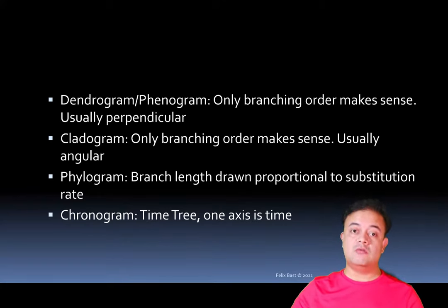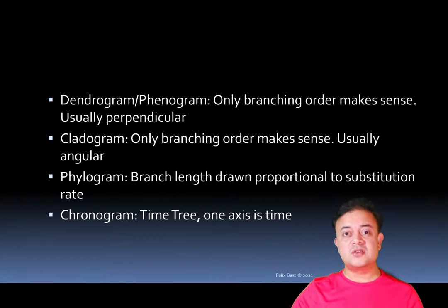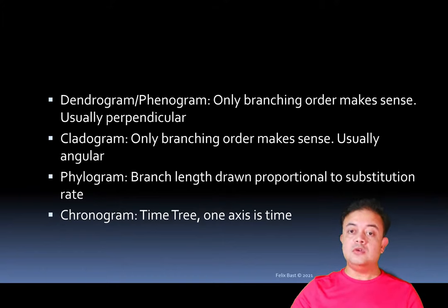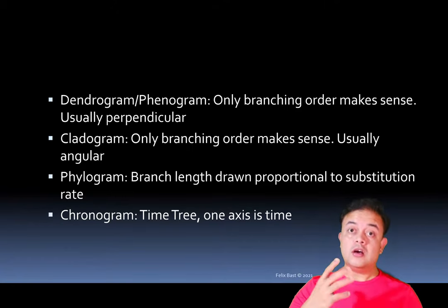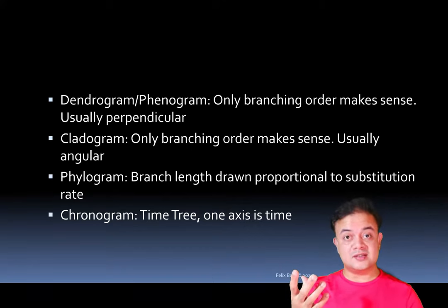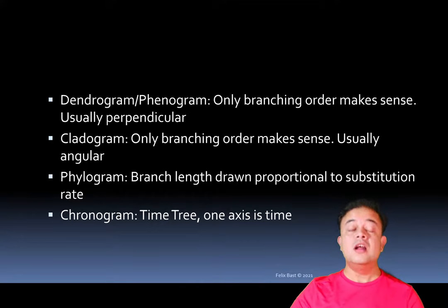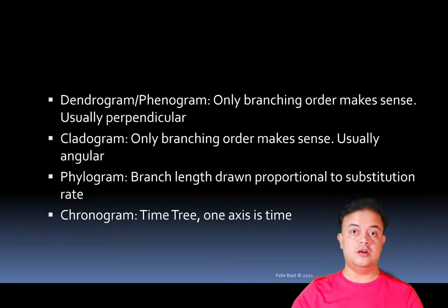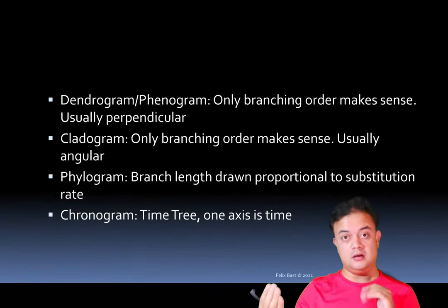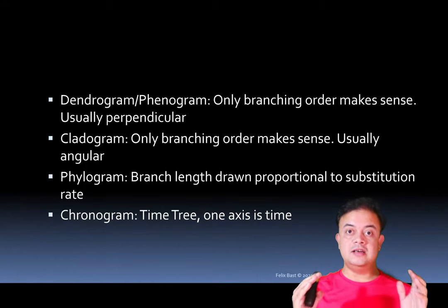There are many ways of drawing or illustrating trees. One form is known as dendrogram or phenogram — though note these terms have no hard and fast definitions and are sometimes used interchangeably. A dendrogram or phenogram usually means that only the branching order makes sense; the branch lengths are usually meaningless. The tree is typically drawn with perpendicular (90-degree) angles. A family genealogy is a kind of genealogical tree — a kind of dendrogram.